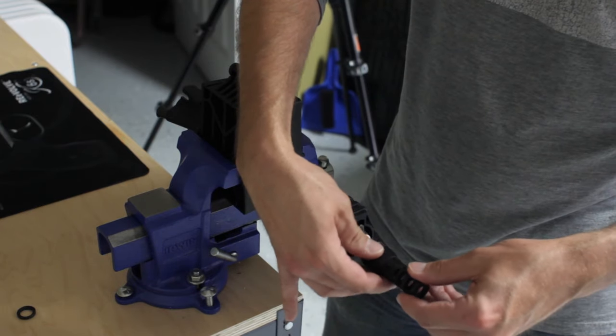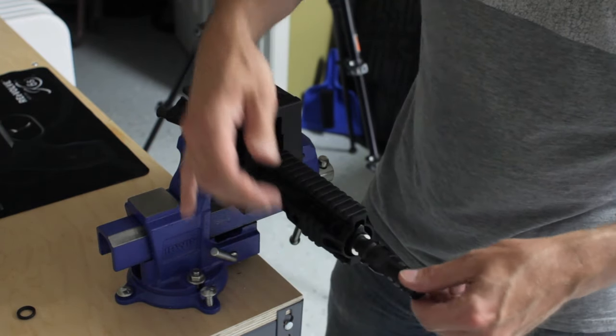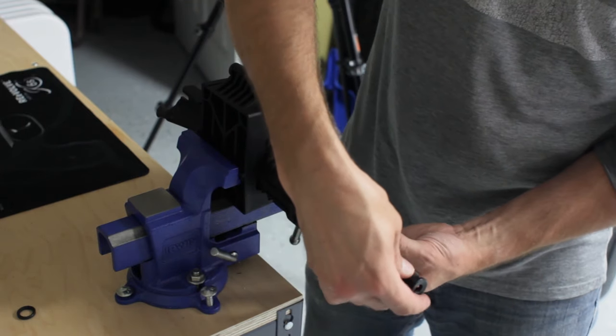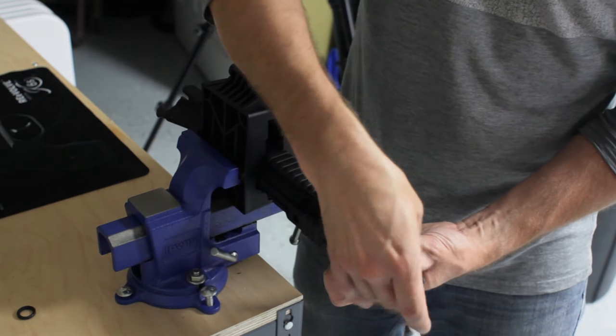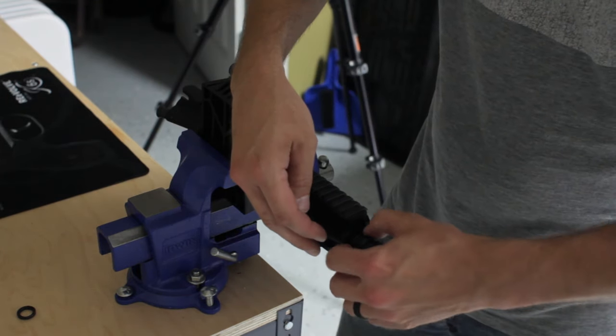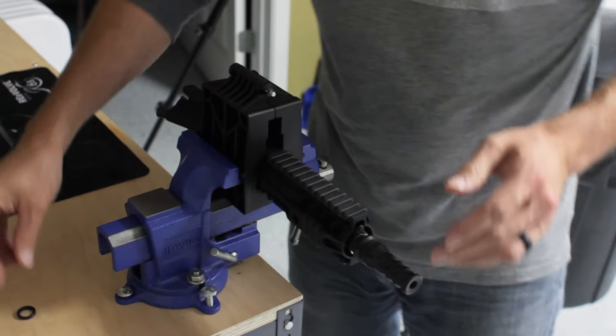Go ahead and get that started on there. Some people ask the question, why is it that you would use timing shims instead of a crush washer? Don't we use crush washers for other types of flash hiders and muzzle brakes that we don't mount suppressors to? And the answer to that is yes.